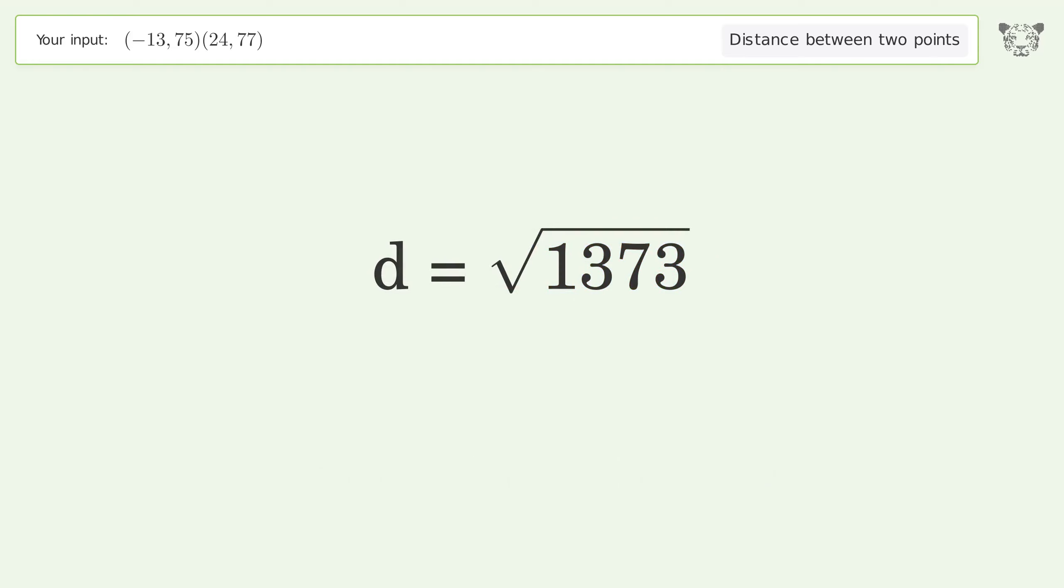And so the distance between the two points is the square root of 1373 or 37.054.